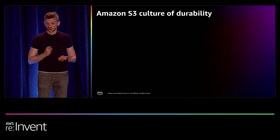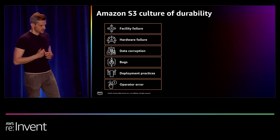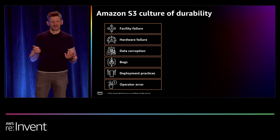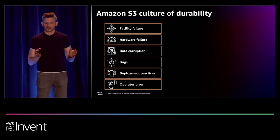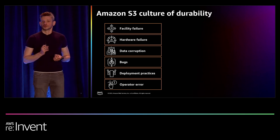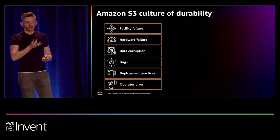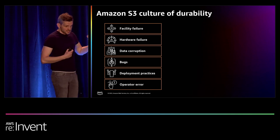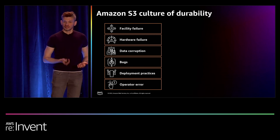We consider much more than hardware failure. Here are some other threats we consider: facility failure, hardware repair, data corruption, and other failure modes. But some may be surprising — bugs in operational practices, for example. Your hard drives may be perfectly healthy, your entire data center perfectly healthy, no fires anywhere. But if you had a bug in your storage node and just deployed it, that node could start flipping bits, calculating incorrect checksums, or doing terrible things to data. As a result, your durability stance has been weakened — you may be writing something you can never read. Same applies to operator error, and you need to think about what tooling to put in place to make processes safe.